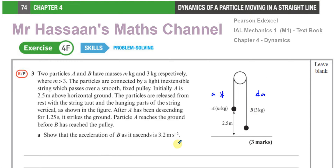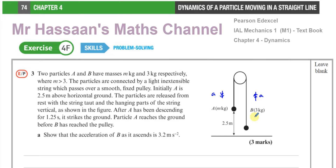Part A asks us to show that the acceleration of B as it ascends is 3.2 metres per second squared. The accelerations of A and B have the same magnitude because they're connected by the same inextensible string — every part of it has the same acceleration. So if I find the acceleration of A as it descends, that's the same as the acceleration of B as it ascends.